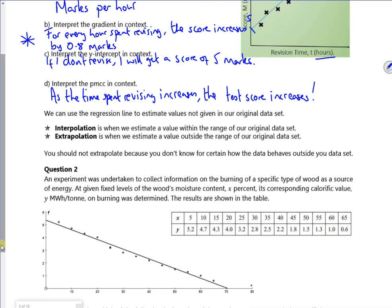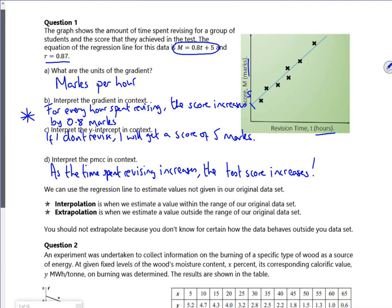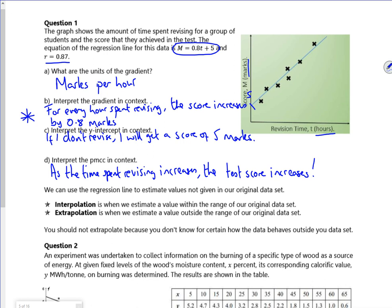Right then. So it says we can use regression lines to estimate values not given in the original data set. So interpolation is if I've got stuff within the range of values. So if I was looking for something between here and here, it's interpolation. Or if I'm looking at something outside of here, it's extrapolation.